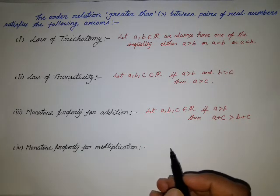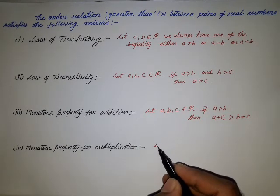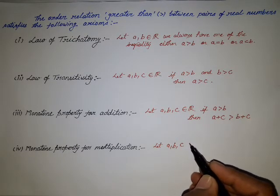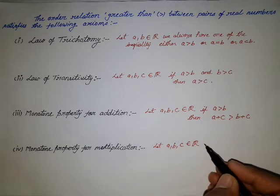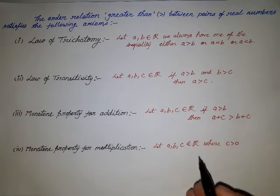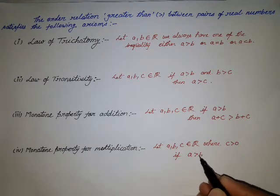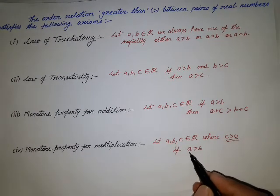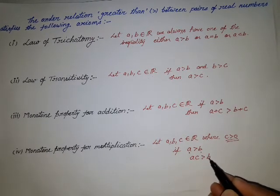The next property is the Monotone Property of Multiplication. For three real numbers a, b, and c belonging to the set of real numbers, where c is a positive number: if the inequality a is greater than b is given, and we multiply the positive number c to both a and b equally, then the inequality remains the same.